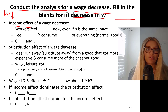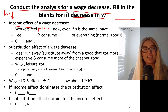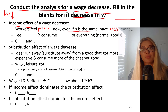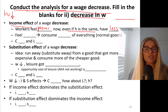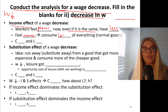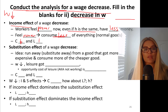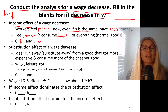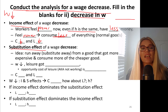Let's say my wage rate was $15 and now it is $7 — I feel poorer. You're going to consume less of all normal goods, so consumption goes down. Leisure is also going to go down. Why? Because you felt poorer — when you feel poor, you consume less of everything. Now for the substitution effect of a wage decrease: substitute away from the good that got more expensive.